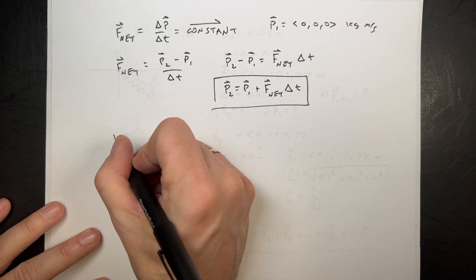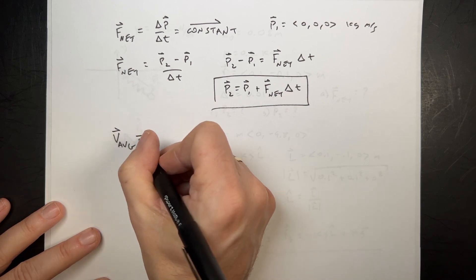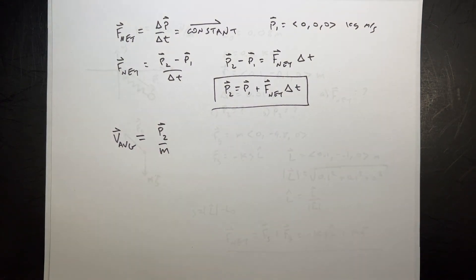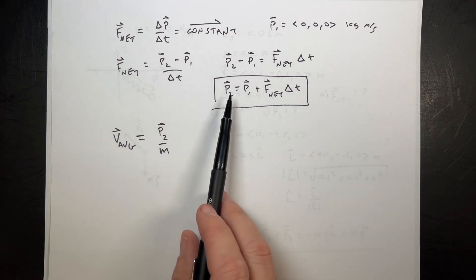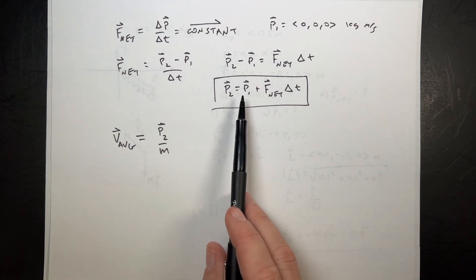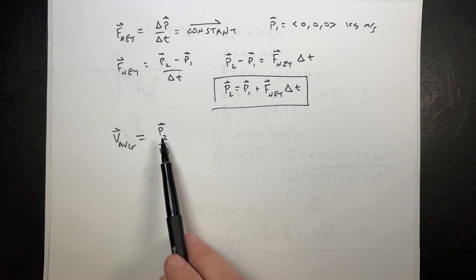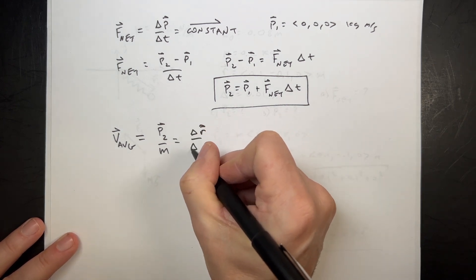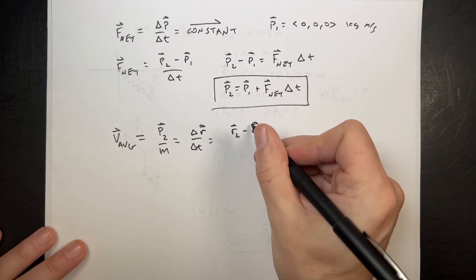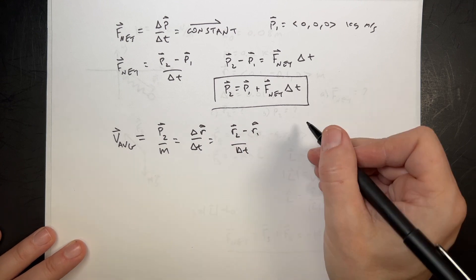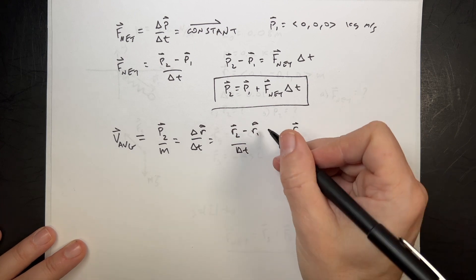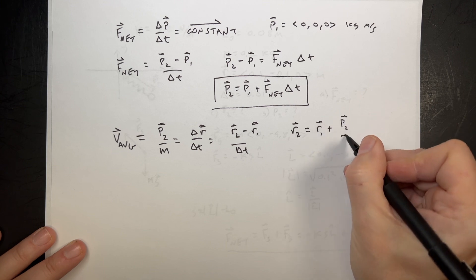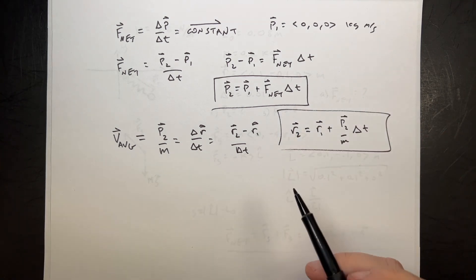What's the final position? So now I can say V average is approximately equal to P2 over mass. This says that the momentum at the end of the time interval I just calculated is the average velocity. So I'm just going to say the average velocity is the final momentum divided by mass to get the velocity. Now if I use the definition of average velocity as delta R over delta T, I can write this as R2 minus R1 over delta T. I know R1, I'm trying to find R2. Multiply both sides by delta T, I get R2 equals R1 plus P2 over M times delta T.